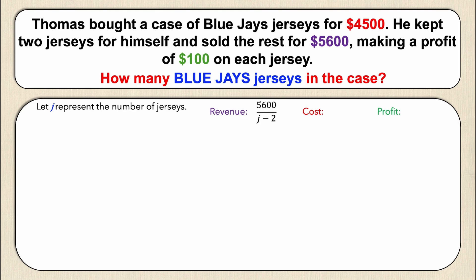Thomas makes five thousand six hundred dollars, so the revenue per jersey is five thousand six hundred over j minus two. The minus two is because he kept two jerseys for himself, so that five thousand six hundred dollars excludes those two jerseys — he didn't sell them. The cost per jersey is four thousand five hundred over j. And the profit per jersey is given directly in the question as one hundred dollars per jersey.